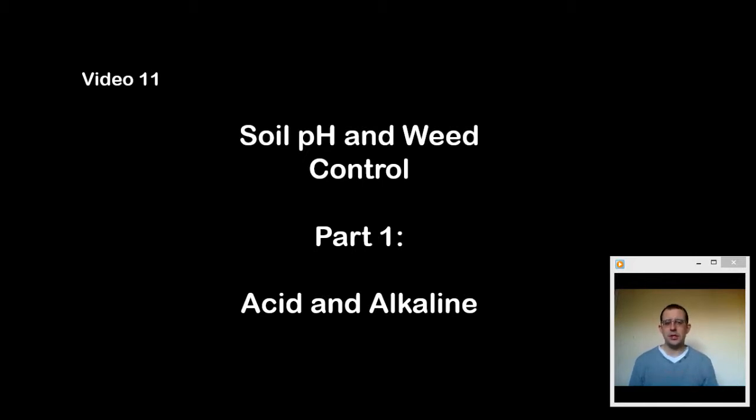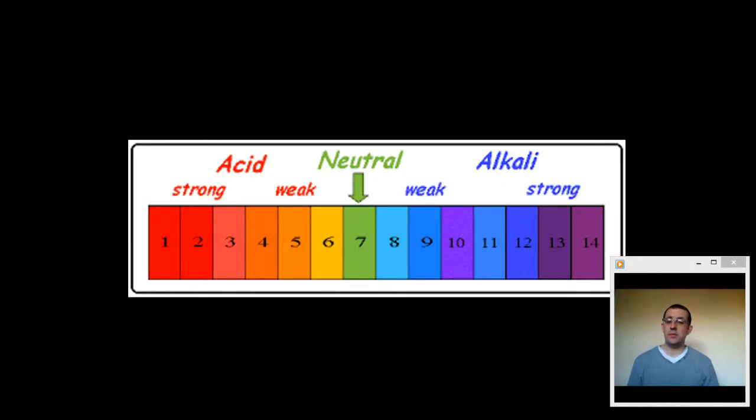We give pH a range. A pH of 7 means that something is neutral. In other words, it's not acidic or alkaline. Water which has been distilled usually has a pH of 7.